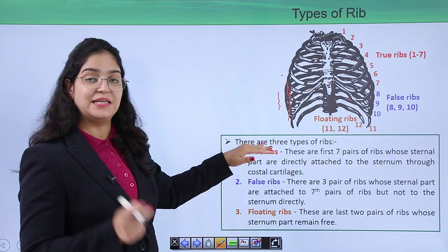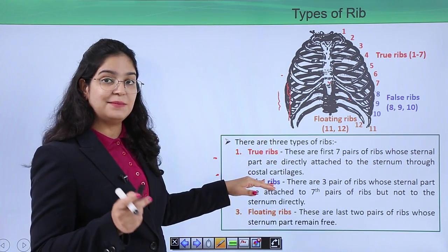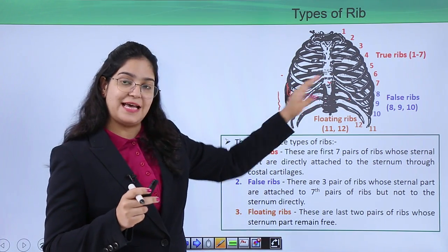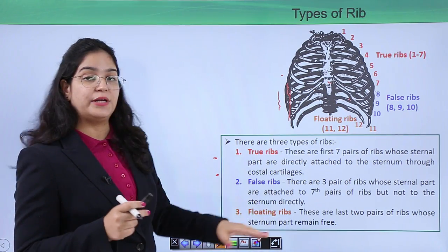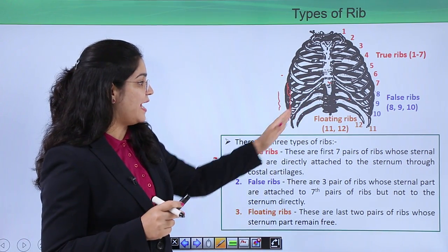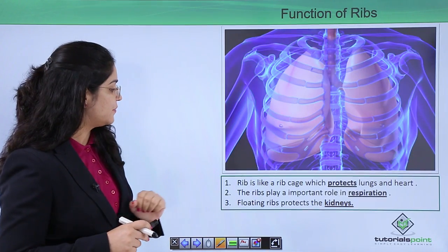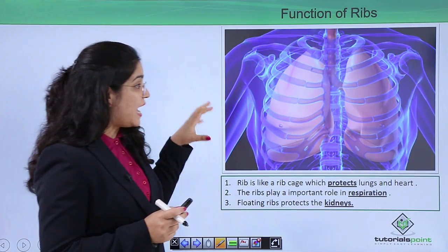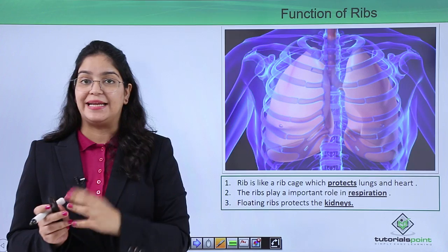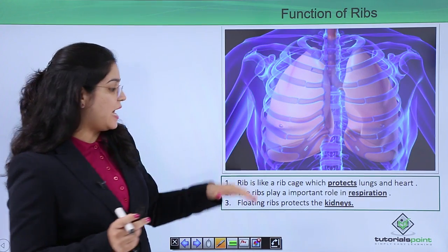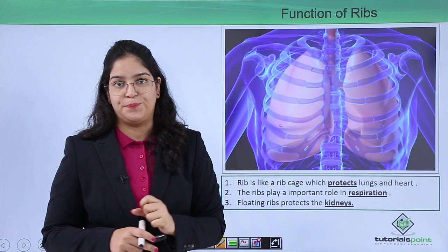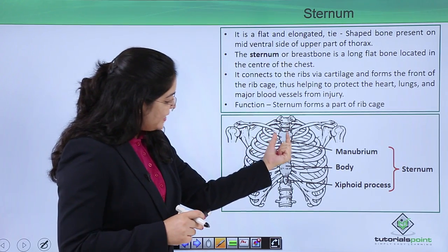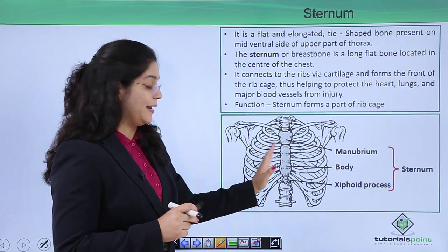To summarize: true ribs are directly connected to the sternum; false ribs are connected to the sternum indirectly through the seventh rib; and floating ribs are not connected to the sternum at all. The functions of the ribs include protecting our vital organs such as the heart, lungs, and kidneys, and also helping us in respiration.